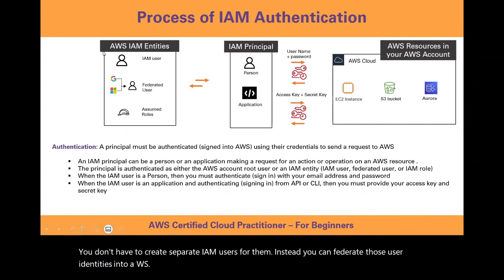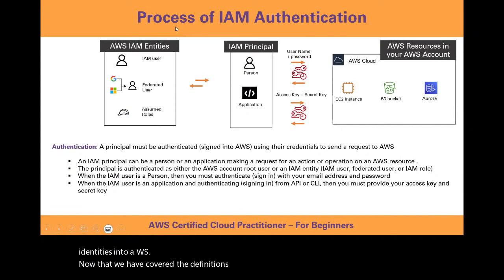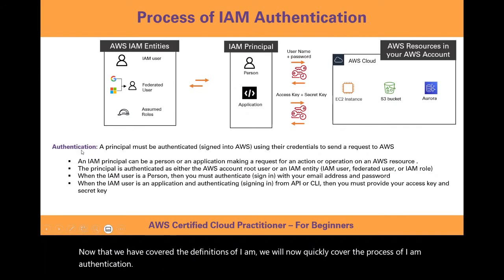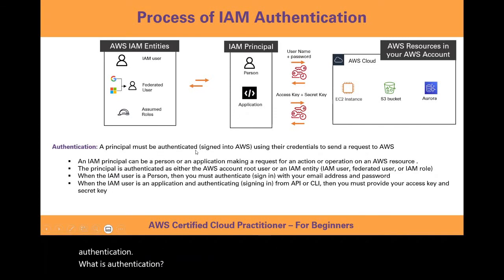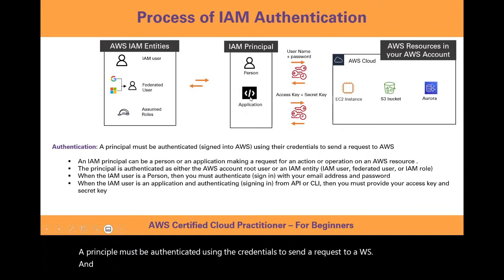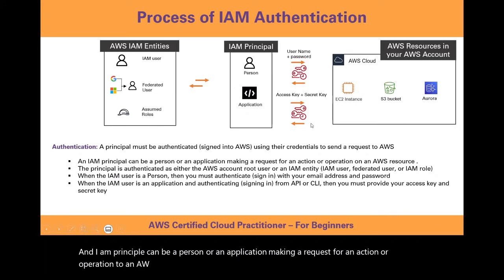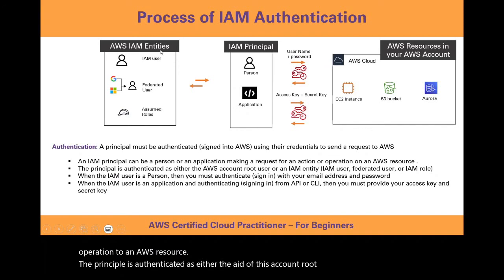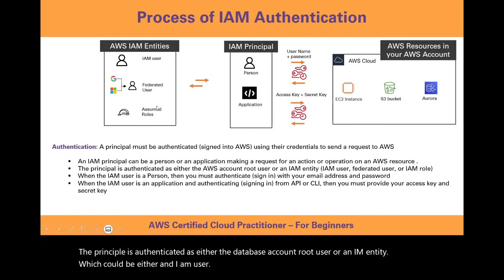Now that we have covered the definitions of IAM, we will now quickly cover the process of IAM authentication. What is authentication? A principal must be authenticated using the credentials to send a request to AWS. An IAM principal can be a person or an application making a request for an action or operation to an AWS resource. The principal is authenticated as either the AWS account root user or an IAM entity, which could be either an IAM user, a federated user, or assumed roles.